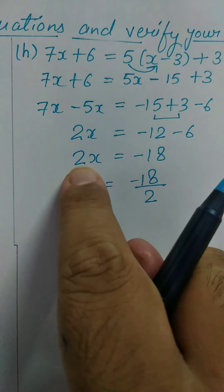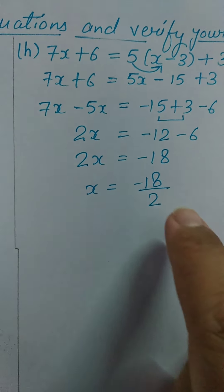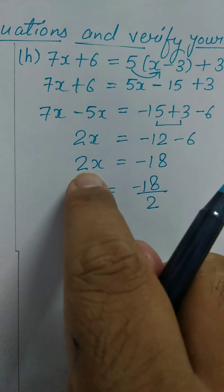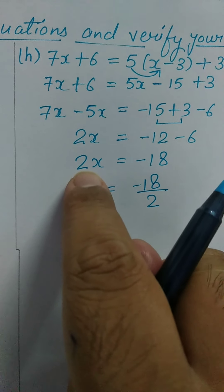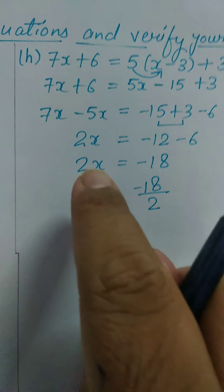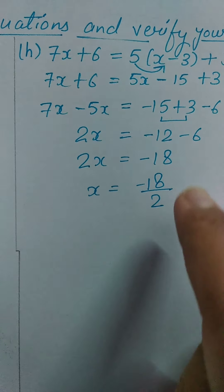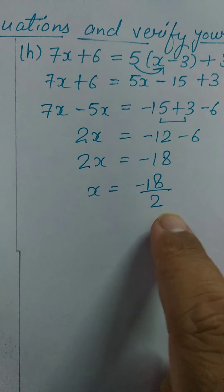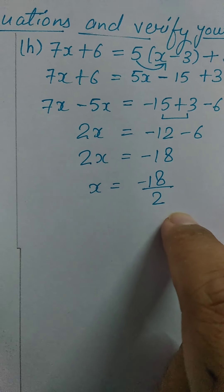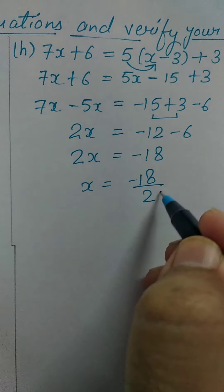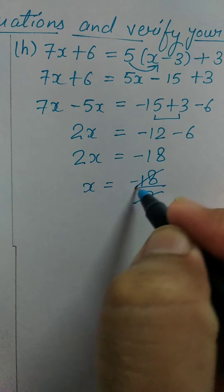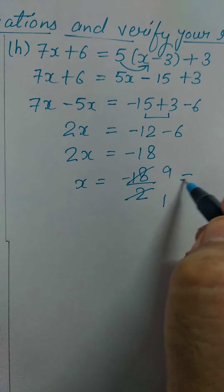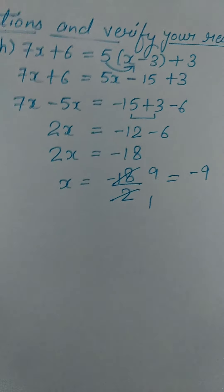The 2 in LHS was in multiplication; when shifted to RHS, it changes to division. 2 ones are 2, 2 nines are 18. So X is equal to minus 9.